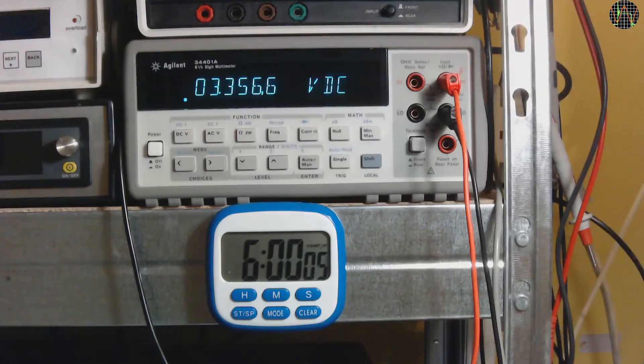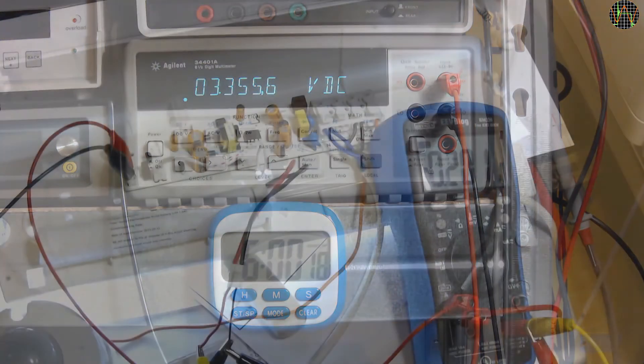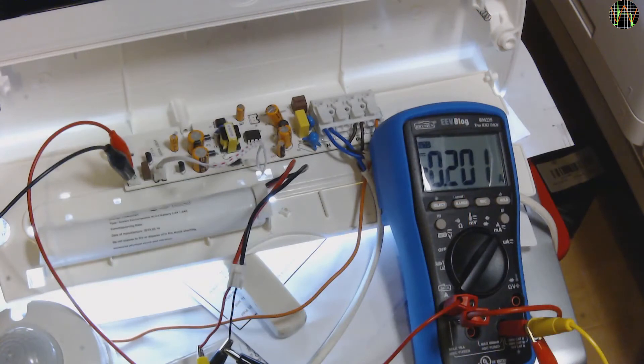6 hours in, the battery has dropped to 3.35V, which means each cell is now slightly above 1.1V and we are rapidly approaching the recommended cut-off voltage for Nickel-Cadmium cells. And the current has dropped by around 50mA to 200mA. I can't really notice much difference in the brightness of the LEDs.